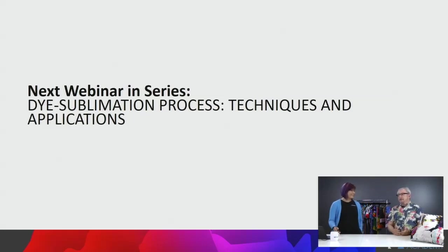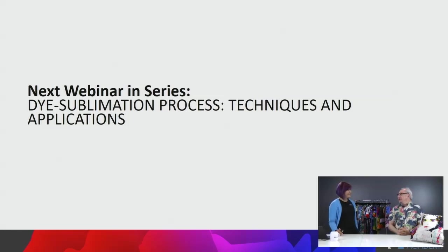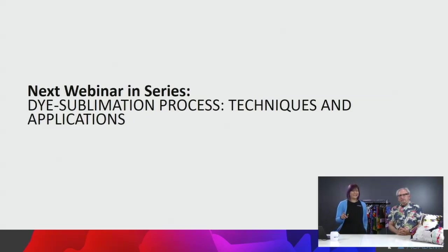If there's a situation where maybe something froze or there's something wrong with the fabric, we'll know right away because we know this customer does everything correctly and we can take those variables out. If somebody doesn't have it all documented and isn't running by a system, you can't fix it easily. The next and last part of our six-part series is the dye sublimation process, techniques, and applications — that will wrap it all up, so stay tuned for that. Thank you so much.